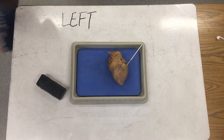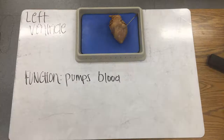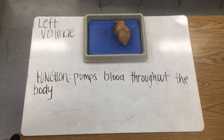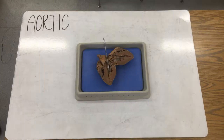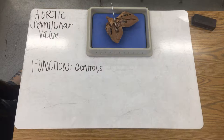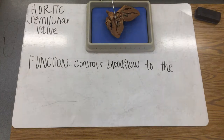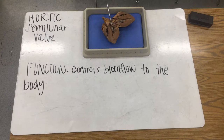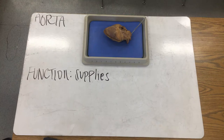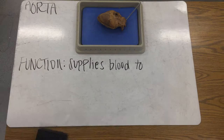Once the blood reaches the left ventricle, it is then pumped throughout the body. The aortic semi-lunar valve is what controls the blood flow from the left ventricle to the rest of the body. The aorta is the main artery that supplies the blood through the rest of the body.